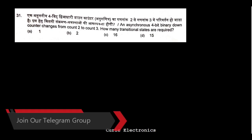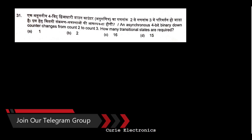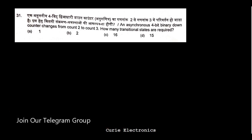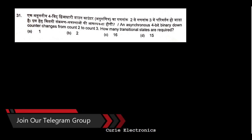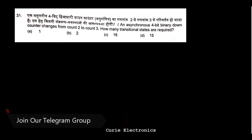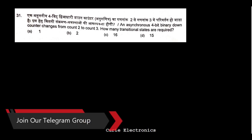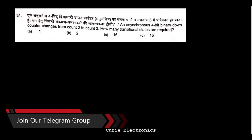The question is: an asynchronous four-bit binary down counter changes from count two to count three — how many transitional states are required? The question is correct, and it is a down counter.